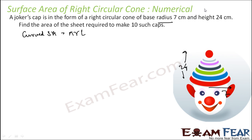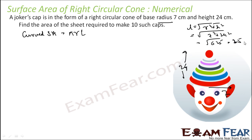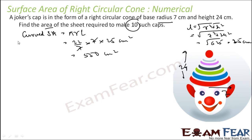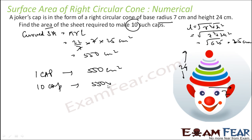Find l = √(r² + h²) = √(7² + 24²) = √(49 + 576) = √625 = 25. CSA = (22/7) × 7 × 25 = 550 centimeter square per cap. For 10 caps: 550 × 10 = 5500 centimeter square. That's the area of sheet required — pretty easy question.